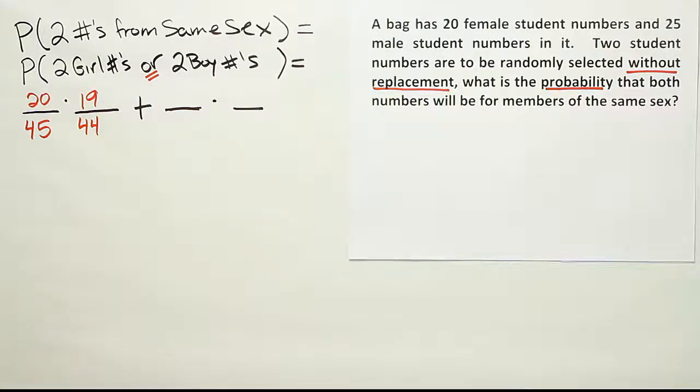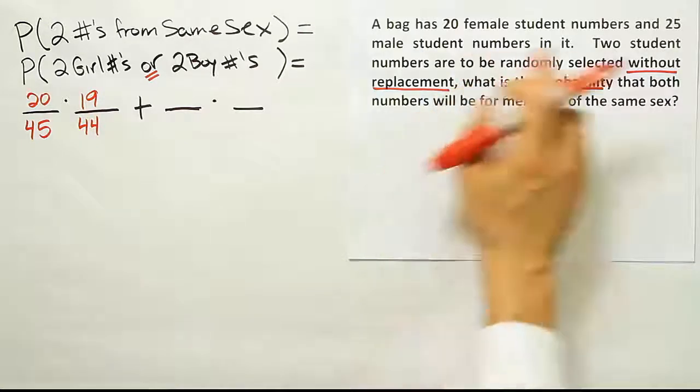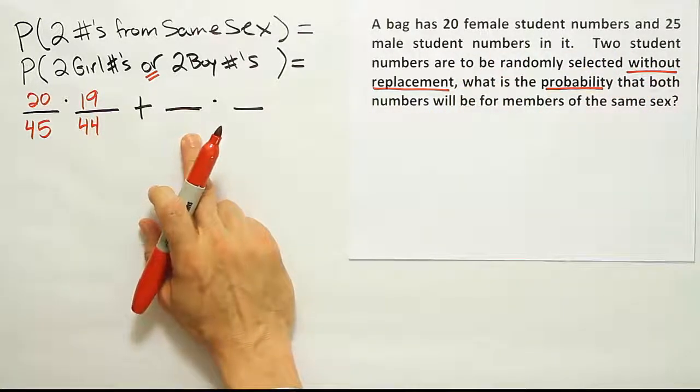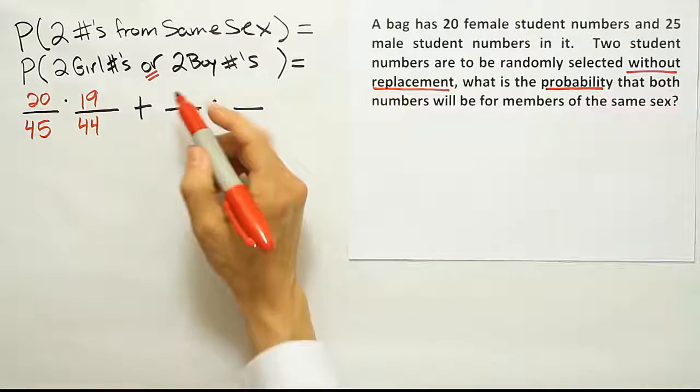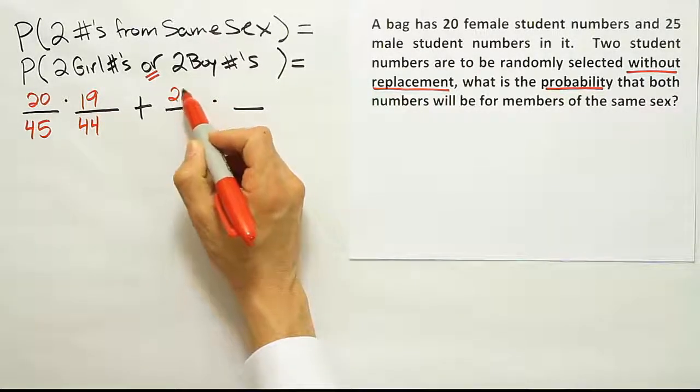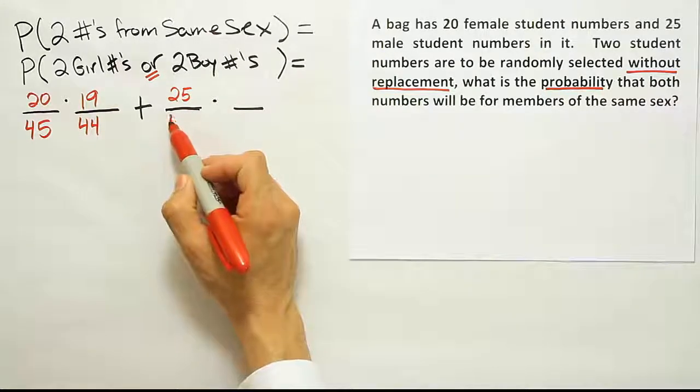In the case of, you know, starting all over again, a new bag has 45 numbers in it, all fresh from scratch again. We go into the bag. What's the probability that we get a boy number the first selection? Well, there would be 25 numbers corresponding to boy student IDs out of a total of 45 students.